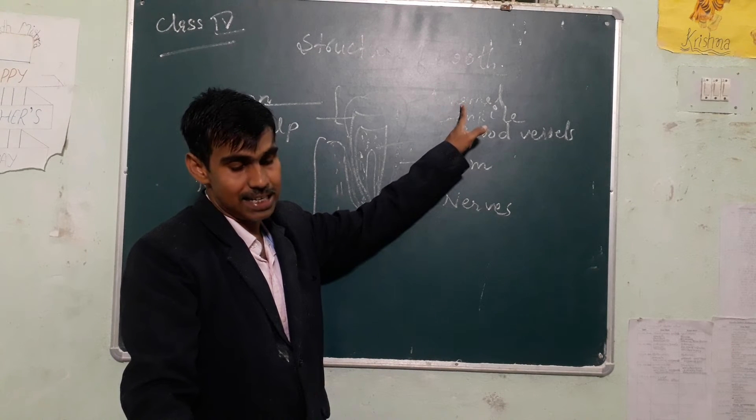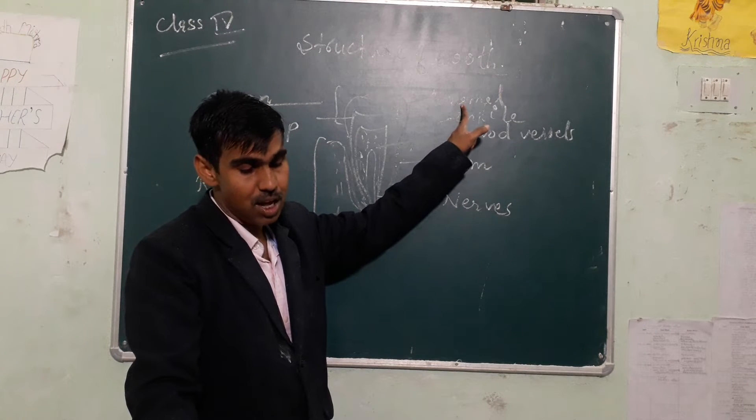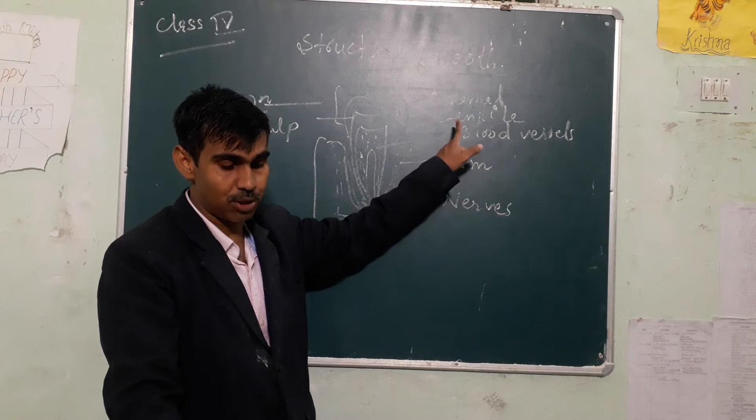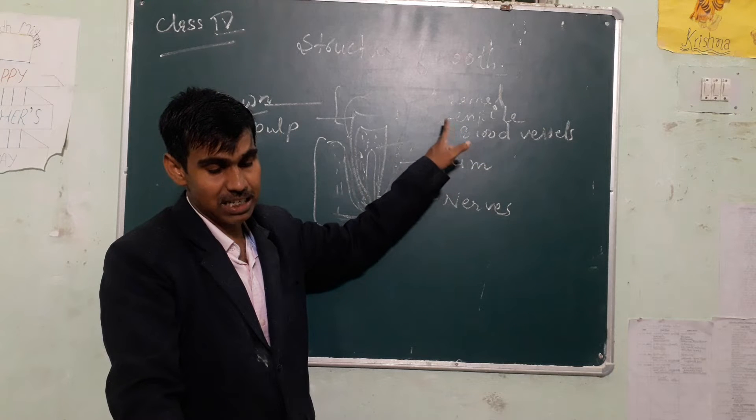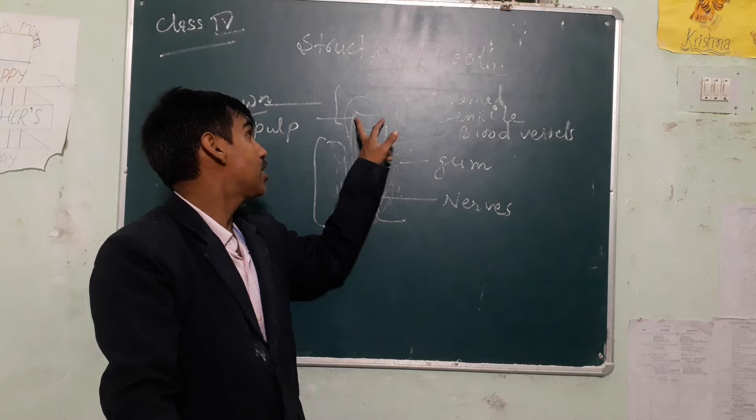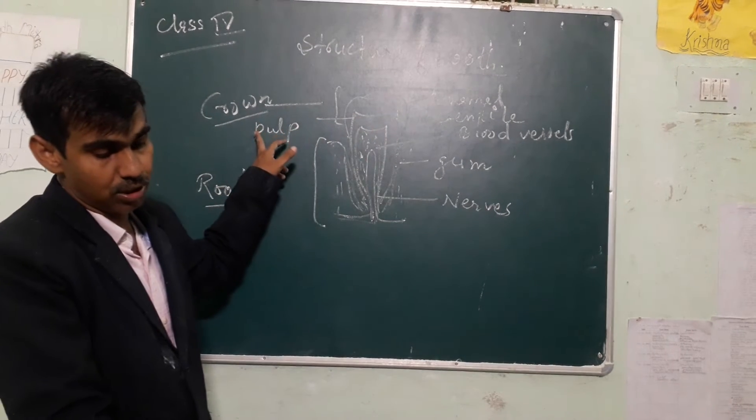The crown is covered with enamel. Below the enamel is the hard part which is dentin. In the center of the tooth is found the pulp.